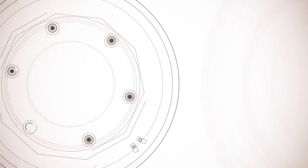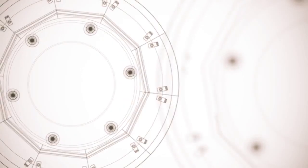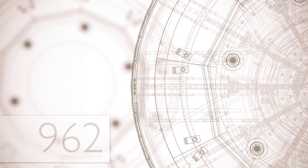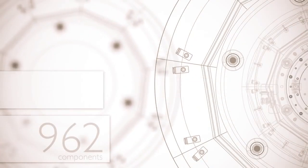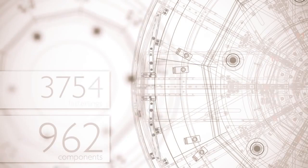Every single component of the table is now drawn on CAD. Every single one, every single screw, every single washer. A table like this has about 962 components and something like 3,756 fastenings.